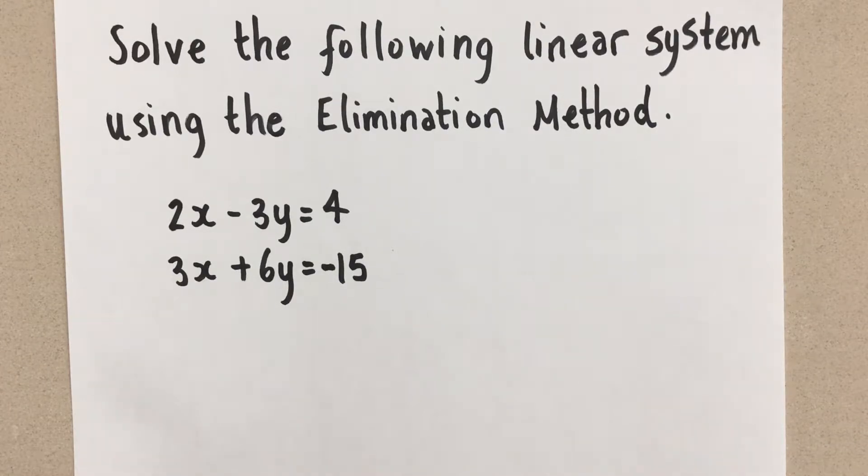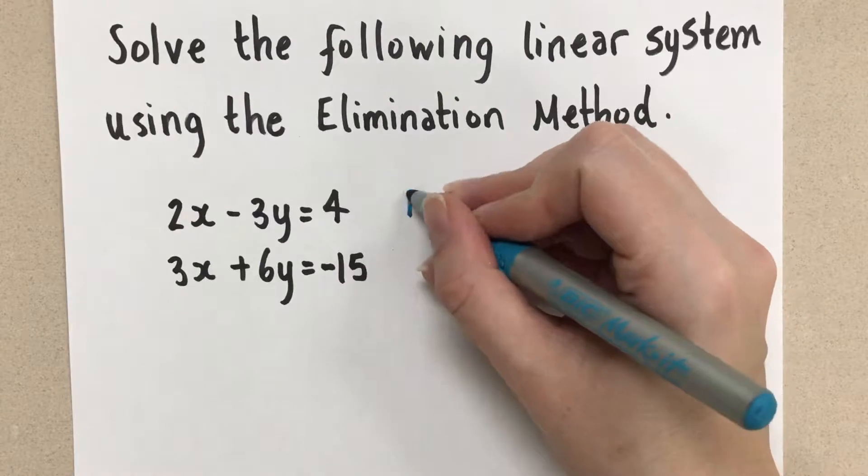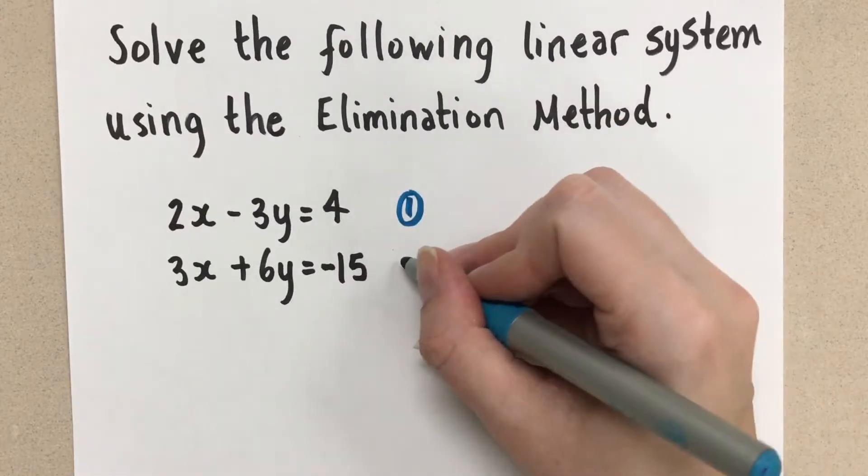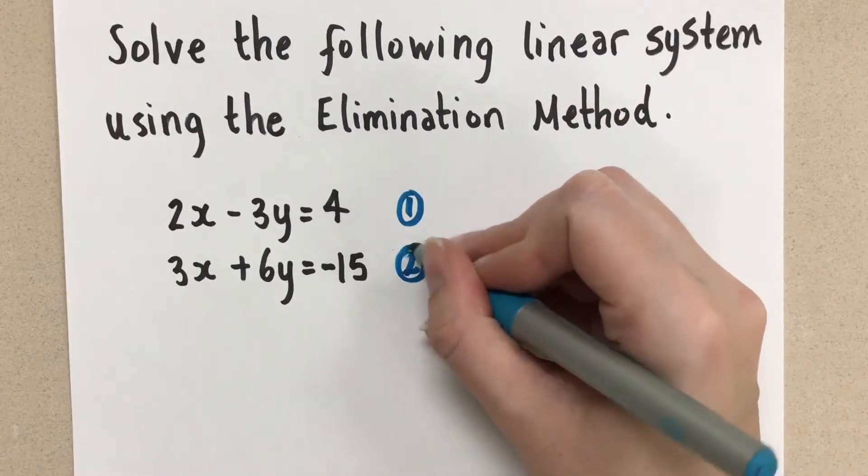So we need to manipulate the equations a little bit here to force them to have the same coefficient because that's how we eliminate a variable. So let's call this equation 1 and let's call this equation 2 here.